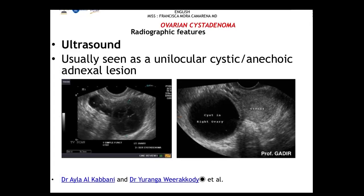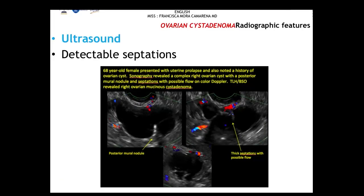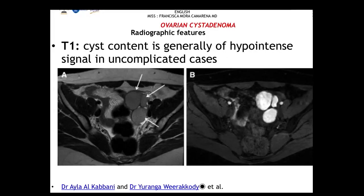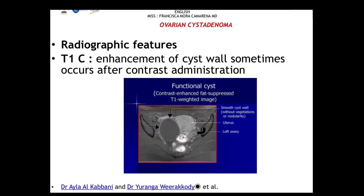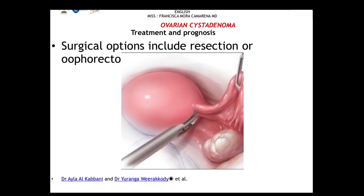Cystadenomas can be found using ultrasound, looking for detectable septations, or CT scan — with T1 showing hypointense cyst content, T2 showing hyperintense fluid, and T1 with contrast for further characterization. Surgical options include resection or oophorectomy.